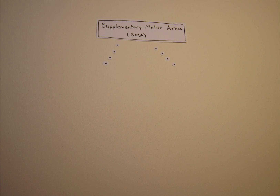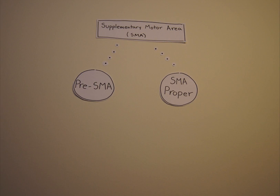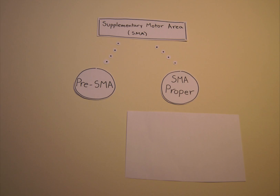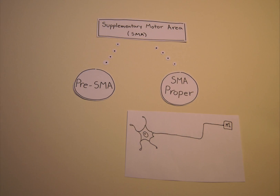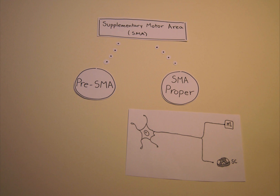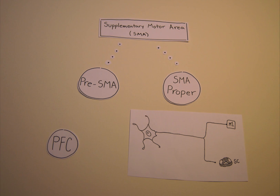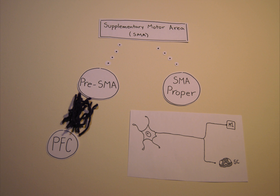The SMA can be subdivided into the pre-SMA and the SMA proper. The SMA proper has projections to the primary motor cortex and spinal cord. In contrast, the pre-SMA is primarily connected with the prefrontal cortex.